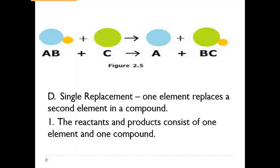The reactants and the products will always consist of one element and one compound. If you have two compounds on both sides, it is not single replacement. So that's one way to identify a single replacement reaction: look for a single element and a compound on the reactant side, and a single element with a compound on the product side.